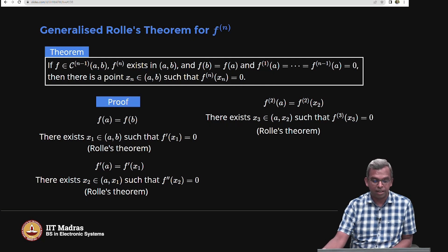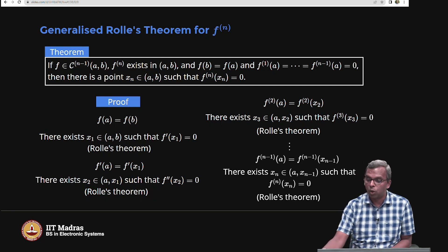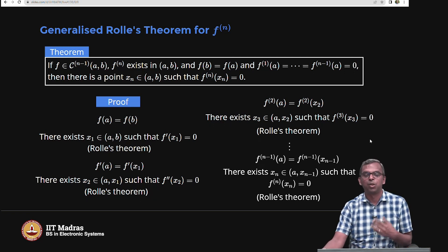The proof is again very simple. F of A equals F of B, so there is an X1 such that F prime of X1 is 0. Then F prime of A equals F prime of X1, so there is an X2 such that F double prime is 0. I repeatedly apply Rolle's theorem, going all the way to F(n-1). Since F(n-1) of A equals F(n-1) of X(n-1), both of which are 0, there exists an Xn such that Fn of Xn is 0.